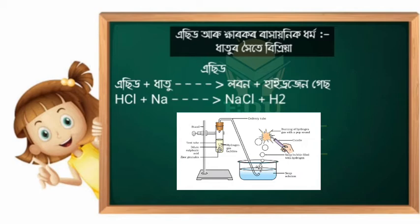We have to do it with hydrogen gas. Now we have to do it: HCl plus Na gives sodium chloride, or NaCl, plus hydrogen gas. You put it on over sodium chloride, and hydrogen gas.